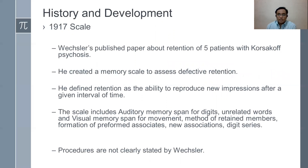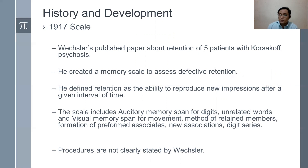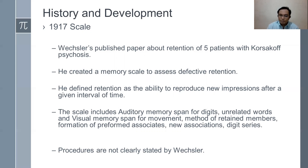In history and development, the 1917 scale was a published paper by Weschler — his master's thesis. His focus was five patients with Korsakoff psychosis, a condition where patients, often due to alcohol misuse, experience confabulation and memory loss. Sometimes these patients speak but cannot remember what they discussed. He created a memory scale to assess defective retention. Weschler defined retention as the ability to reproduce new impressions after a given interval of time. At this point, memory was not yet well-defined; his focus was on retention rather than memory.